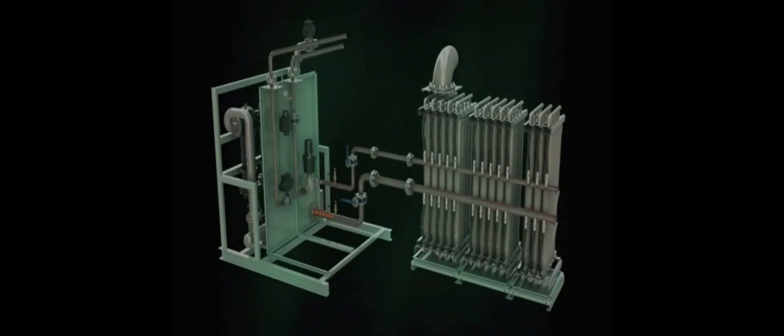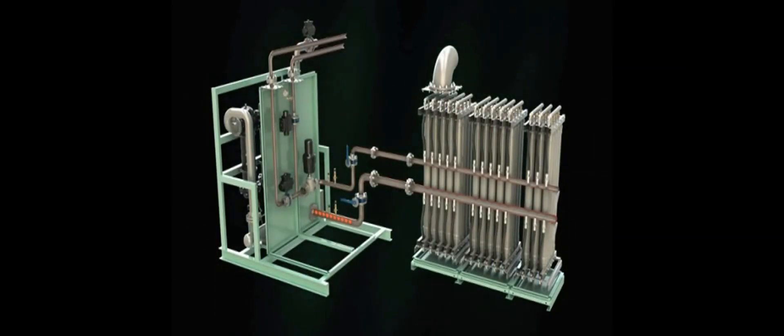The heated air is fed from the filter and control unit to each membrane bank and via a manifold to each individual membrane separator. As compressed air is fed into the separator, oxygen, carbon dioxide, and water vapor permeate through the walls of the fibers faster than the nitrogen, leaving behind a product stream of super-dry nitrogen.